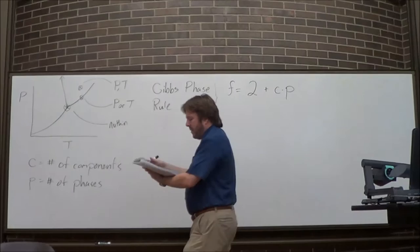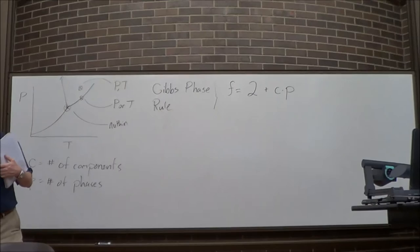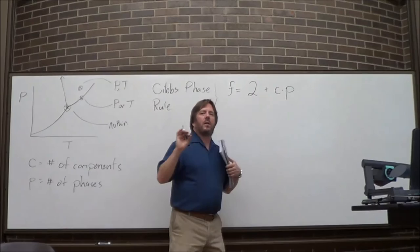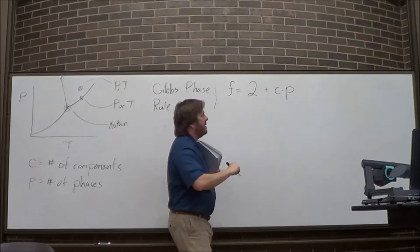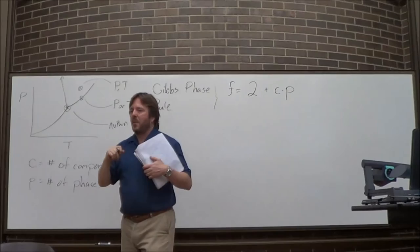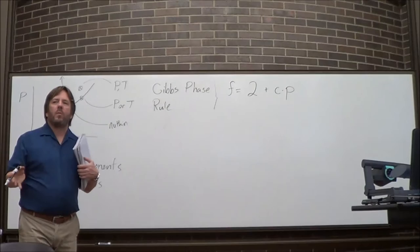Let's take ethanol and water in the liquid phase only — that's one phase, two components. Two from P and T, plus C times P = 2 times 1 = 2, giving four degrees of freedom total.